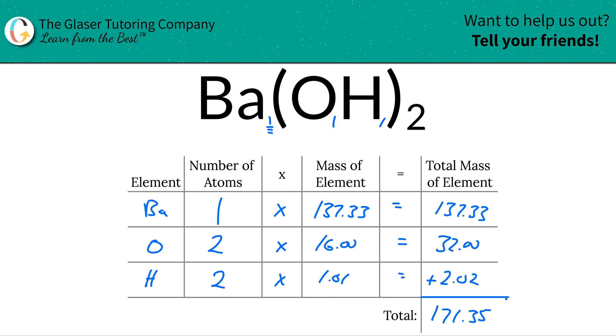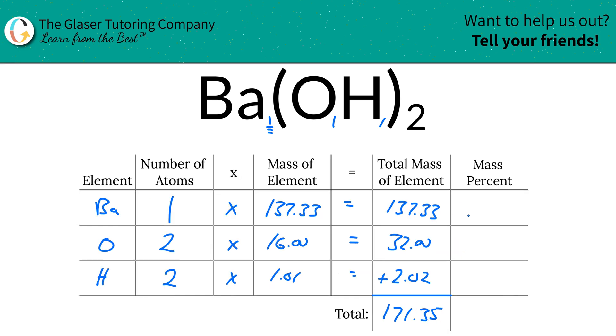But there's one more step to this process for percent composition or mass percent. So I'm going to add another column to the table. So to now calculate the percent composition or the mass percent, it's very simple. Now for barium, we're going to take barium's total mass in the element, 137.33, and we're going to divide that value by the total mass of the compound, 171.35. And this is actually a very simple part over whole percent calculation. We're going to take that and multiply it by 100, and that will tell us the percent.